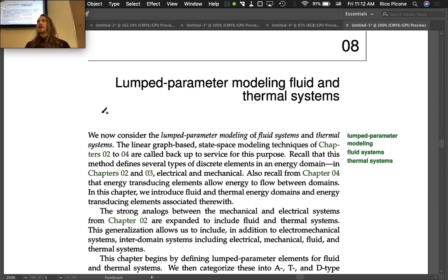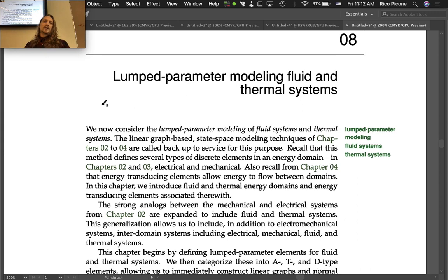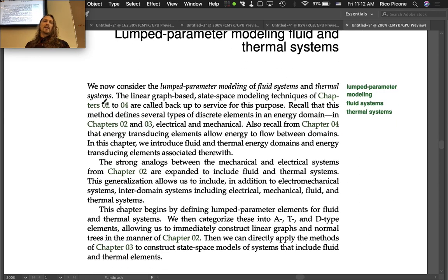The strong analogs between mechanical and electrical systems from Chapter 2 are expanded to include fluid and thermal systems. This generalization allows us to include, in addition to electromechanical systems, inter-domain systems including electrical, mechanical, fluid, and thermal.